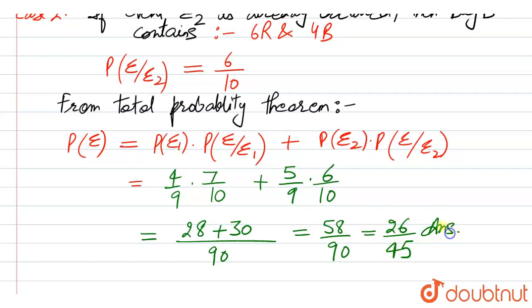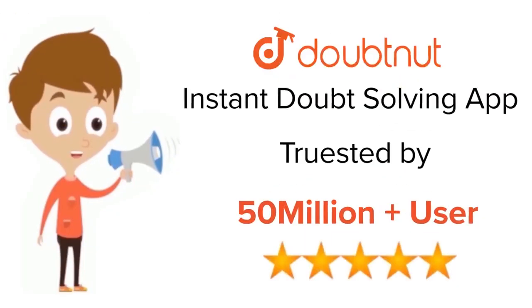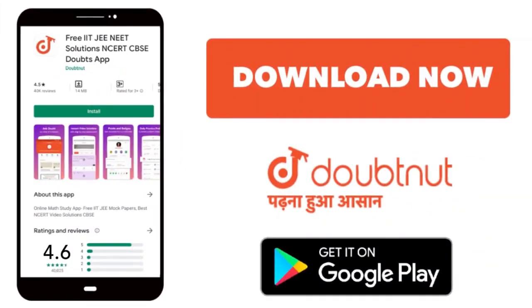This is the final probability that the red ball is drawn from bag B. For class 6 to 12th, IIT JEE and NEET level, trusted by more than 5 crore students — download the DoubtNet app today.